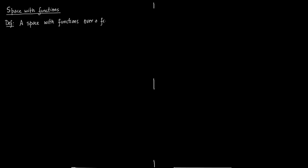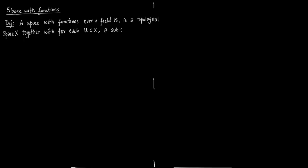A space with functions over a field k is a topological space x, together with, for each subset u of x, a sub-k-algebra — this O of u — of functions which act on u and end up in k.